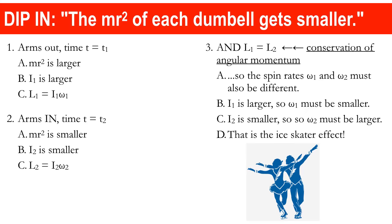Here's an example: if you double the moment of inertia, omega has to be cut in half. If you triple it, omega becomes one-third of its original size. When the ice skater extends her arms, MR² gets bigger, moment of inertia is bigger, and the spin rate is smaller — she slows down.